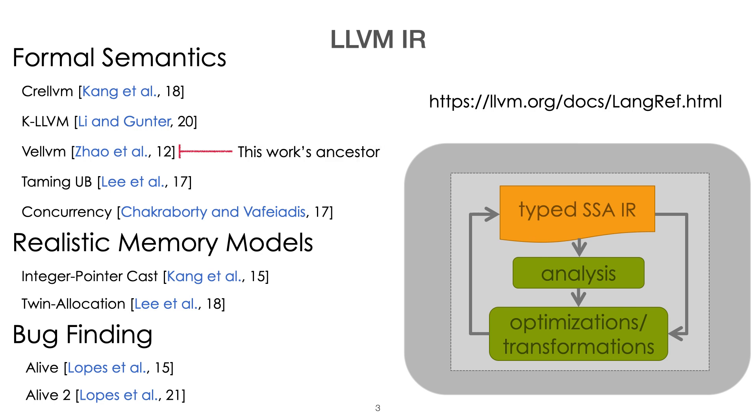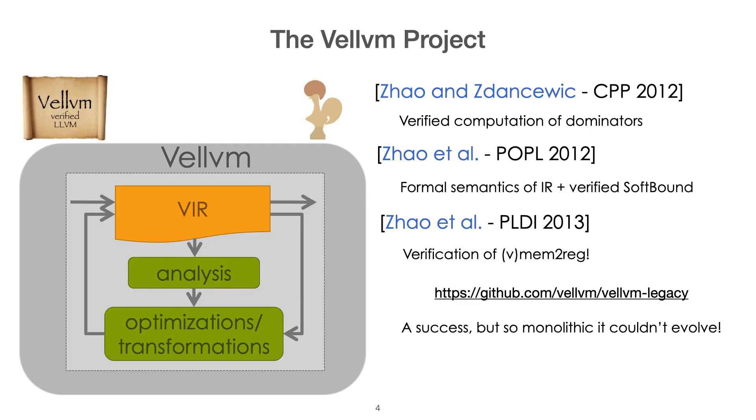The specific line of work that we are based on in particular is called Vellvm, a project that was started in 2012. The idea of Vellvm was to provide a formal semantics in the Coq proof system of LLVM IR. It was a success, a significant subset of language was formalized, and even better, complex optimizations have been proven with respect to these semantics.